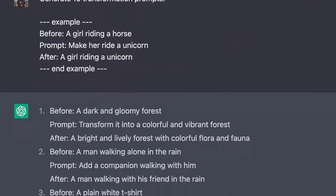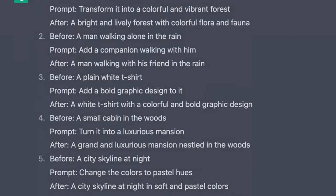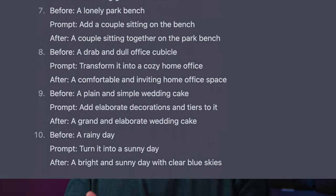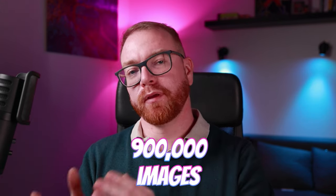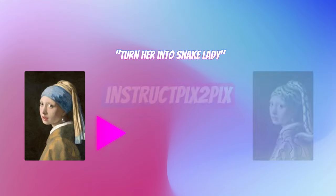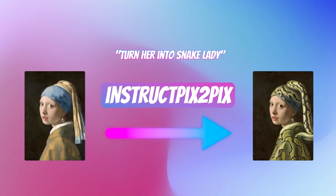They asked GPT-3 to generate more prompts like that, and GPT-3 complied. From that they generated 450,000 different modification prompts, then got Stable Diffusion to generate the before and after pictures for all of those. At the end of this process they had 900,000 images before and after. They took that and trained the machine learning algorithm to go from before to after once it gets the prompt.